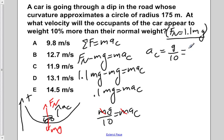But we remember that a centripetal is equal to v squared over r as well. Now the question is, at what velocity will the occupants of the car appear to weigh 10% more? So we're trying to solve for v.